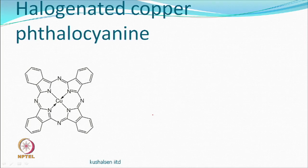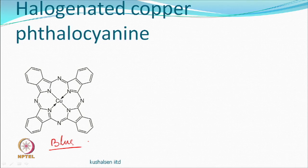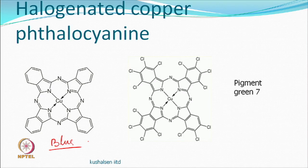Copper phthalocyanine gives a beautiful near-turquoise blue, and this shade is not easy to obtain otherwise — it can be used as a pigment with no solubilizing groups. Adding chlorine atoms across the molecule shifts the color from blue to green, though environmental concerns about chlorine compounds may restrict its use.